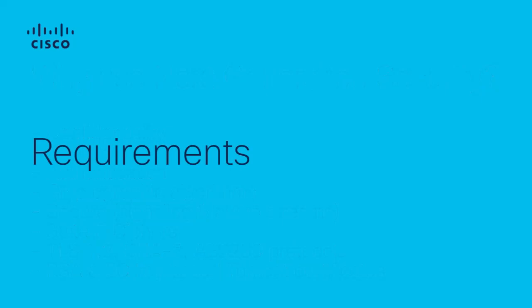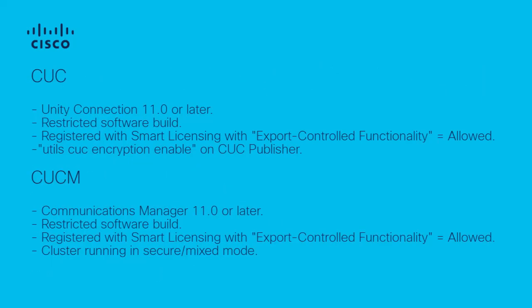Several requirements need to be outlined. Next-generation security requires a Unity Connection version 11.0 or later Restricted Software Build. Restricted Software Builds allow encryption on the product; unrestricted builds do not allow encryption. The Unity Connection cluster must be registered with smart licensing with the export-controlled functionality allowed. Once licensed, the Utils CUC Encryption Enable command must be executed at the CLI of the CUC publisher to enable encryption, or the next-generation security configuration will fail.